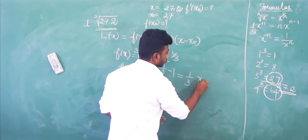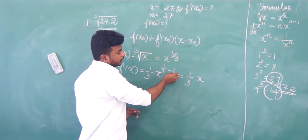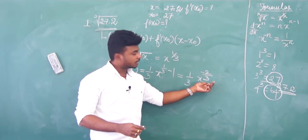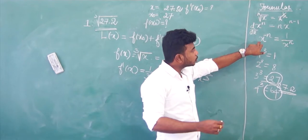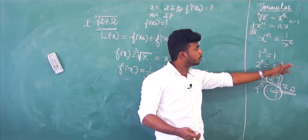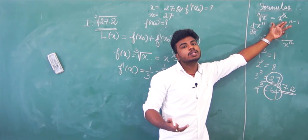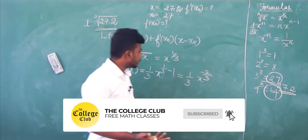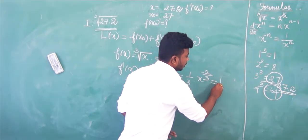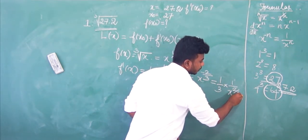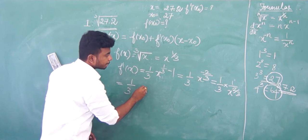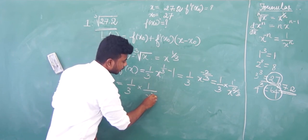Simplifying: f'(x) = (1/3) · x to the power (1/3 − 1) = (1/3) · x^(−2/3). Using the rule x^(−n) = 1/x^n, we get f'(x) = 1/(3 · x^(2/3)), which equals 1/(3 · cube root of x squared).